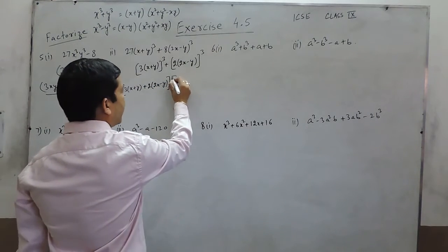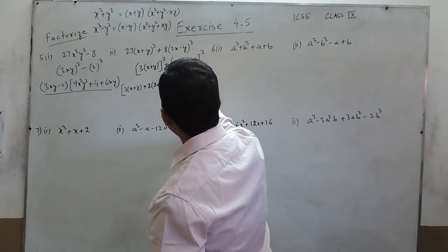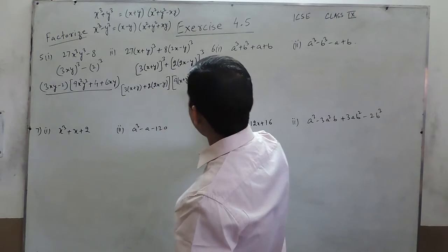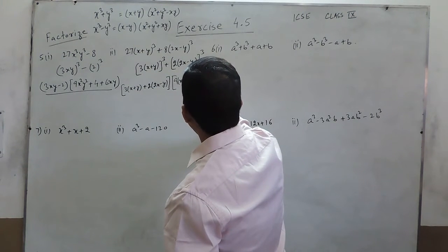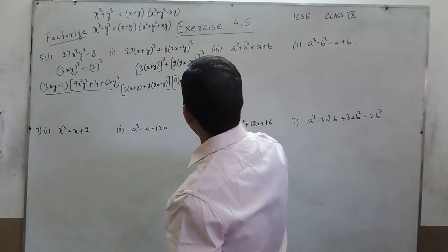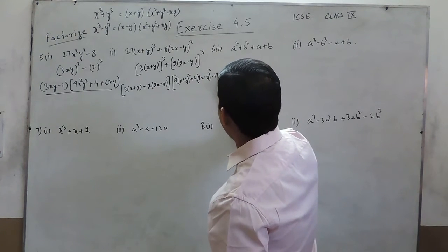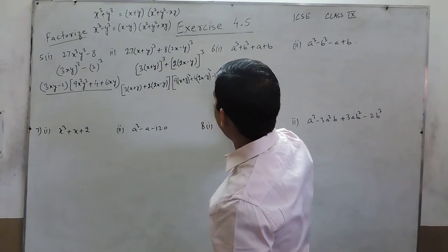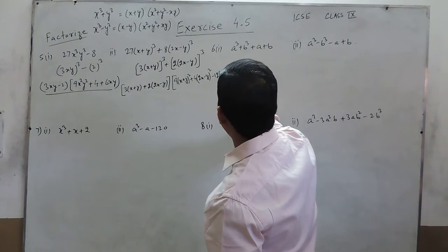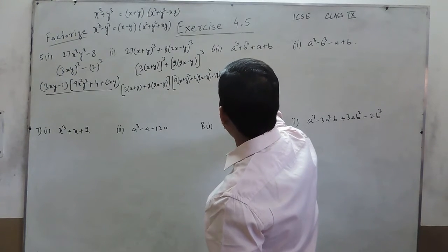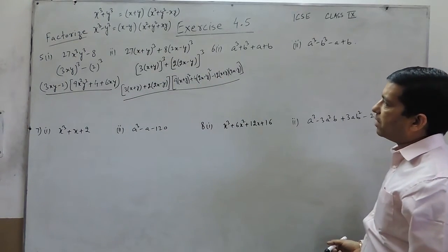The second factor will be the square of the first term, that is (9(x+y))², plus the square of the second term, that is (2(2x-y))², minus the product of the two terms, which is 12(x+y)(2x-y). So this is the complete factorization of part 2 of question number 5.